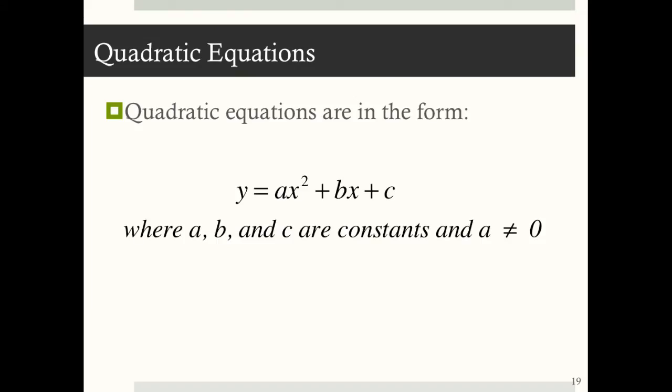So let's break apart this form: y is equal to ax squared plus bx plus c. y, of course, is the dependent variable, and the x's are the independent variable — they show up twice in most cases. c is the vertical intercept, so when we set x equal to zero, we get that y-intercept, and that is c.